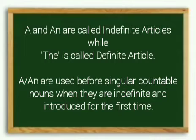A and An are called indefinite articles while The is called definite article. A and An are used before singular countable nouns when they are indefinite and introduced for the first time.